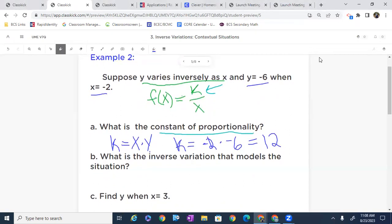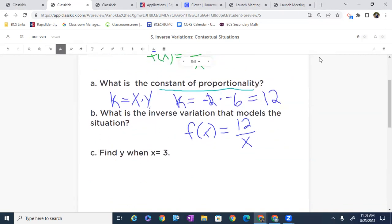And what we're going to do now is simply set up our function. What inverse variation can we use that models the situation? So I'm just going to write f of x equals 12 over x. There it is. And now we can use this function to determine other values along our curve or our graph.